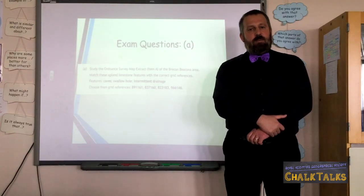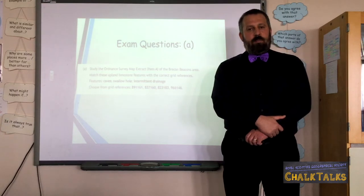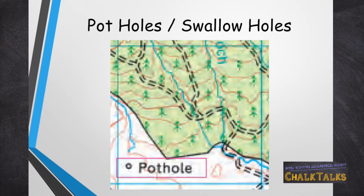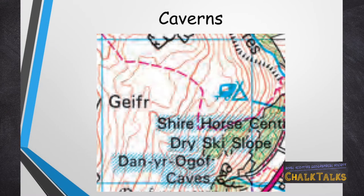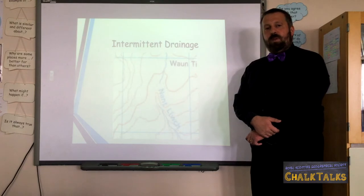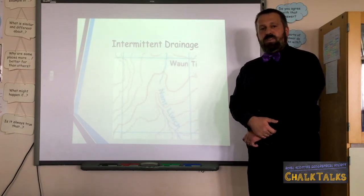Let's have a look at what some of these landscape features actually look like on Ordnance Survey maps. Limestone pavements can be identified by rocky outcrops, normally associated with slightly flatter parts on the side of a mountain or hill. Potholes or swallow holes can normally be identified simply by the name 'pothole' — sometimes you'll find variations like 'water sinks'. Caverns can again be identified by the name 'caves', or the name of a particular cave if it's famous, as in this case in the Brecon Beacons. Stalactites and stalagmites don't really show up on Ordnance Survey maps because they are underground features and so cannot be seen on surface maps.